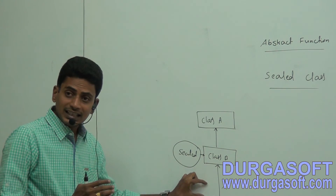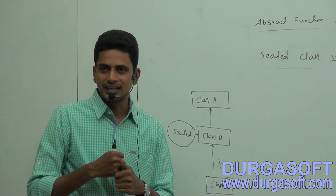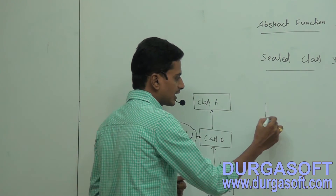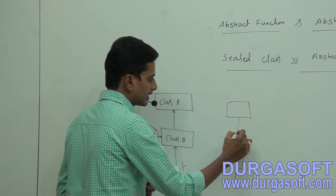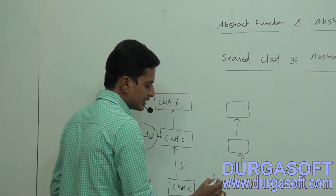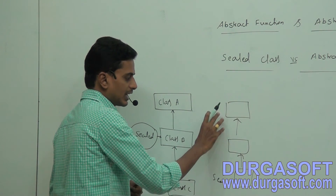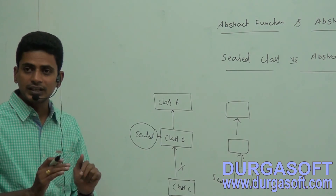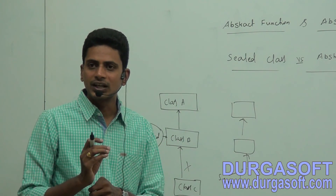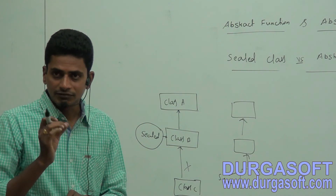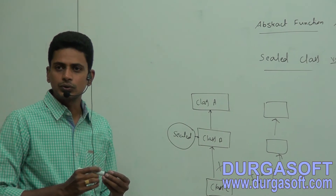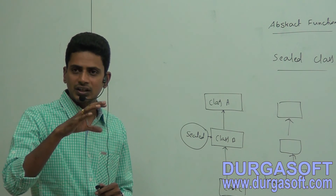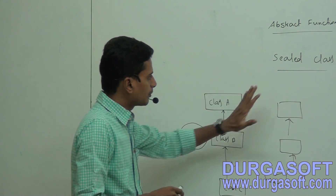Sealed class is always the bottom-most class in the inheritance hierarchy. In an inheritance hierarchy with multiple classes, sealed class is always at the bottom. The main intention of sealed class is to avoid further inheritance. To make any class as sealed, use the 'sealed' keyword. Sealed class can never act as a base class.